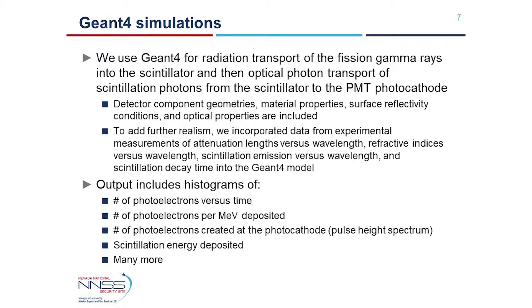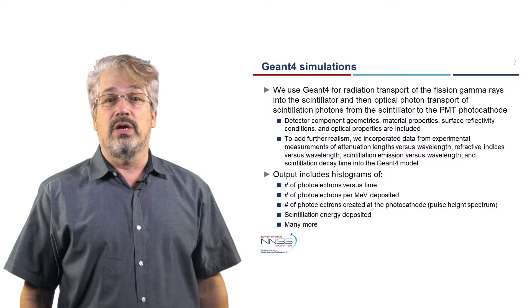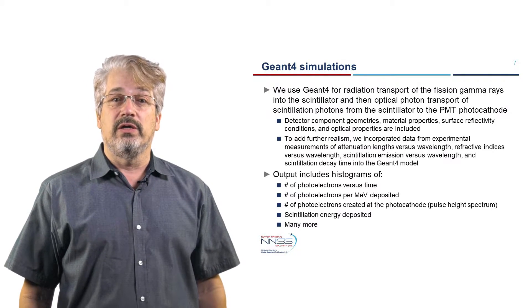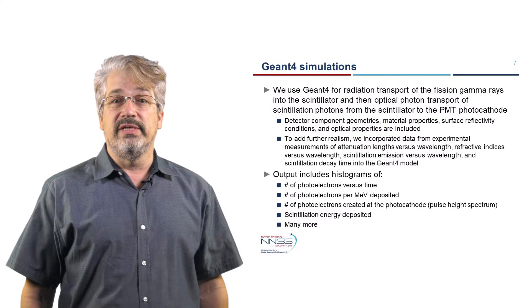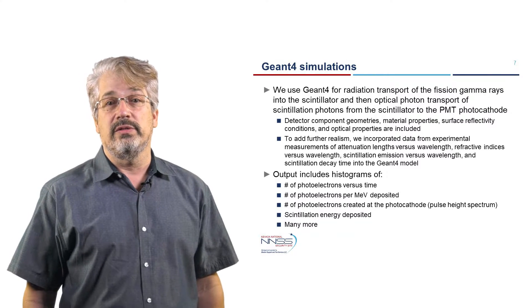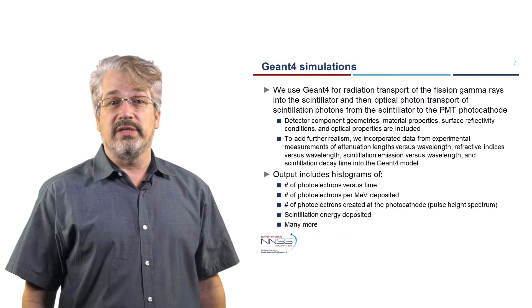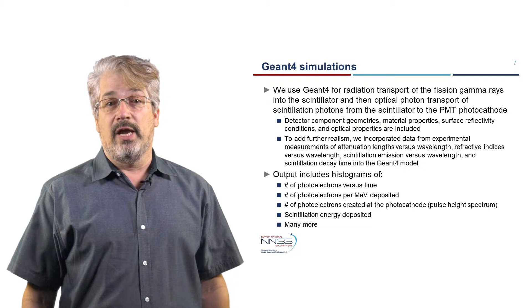More specifically, we use Geant4 for radiation transport of the fission gamma rays into the scintillator and then optical photon transport of scintillation photons from the scintillator to the PMT photocathode. The simulation starts each event by drawing one gamma from a given energy spectrum and directing that gamma toward a random position on the front face. The gamma then enters the scintillator and, according to its elemental composition, density, and gamma cross-section, scatters with one of the atoms and leaves energy usually in the form of scattered electrons. That interaction causes scintillation photons.